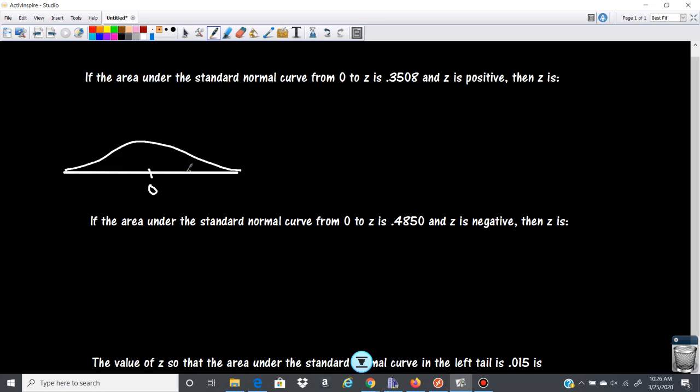So z is over here on the positive side and we'll say, I don't know, it's maybe right here. And our area is 0.3508. Okay, so what they're telling us is that this area is 0.3508 and we need to find the z score.